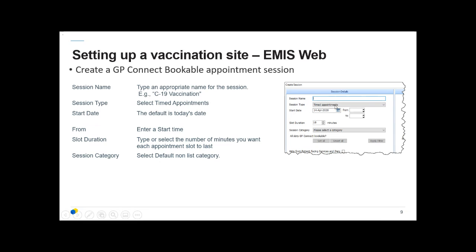Select Timed Appointments and choose a start date, which will default to today but will likely be in the future. Set your from and to times, slot duration — the suggestion is to base this on your flu clinics, but you might want to allow slightly more time given that you'll be dealing with some new systems.